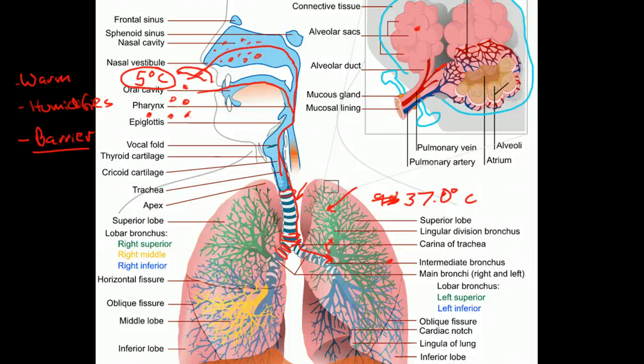There are three major lobes to the lungs. They're divided by fissures. There's three major lobes on the right side. There's only two lobes on the left side.